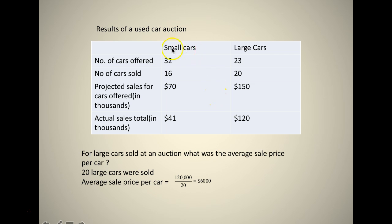Coming to a problem on averages, we have a table here: results of a used car auction showing the number of cars offered, small cars and large cars; number of cars sold, small and large; projected sales for cars offered, small and large; and actual sales, small and large.